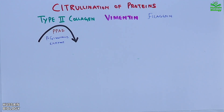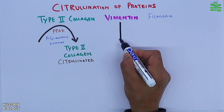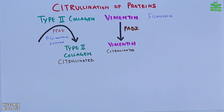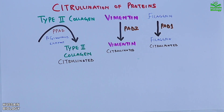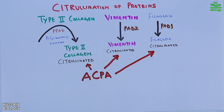Vimentin is citrinated by the PAD2 enzyme, and filaggrin is citrinated by the PAD3 enzyme. These citrinated proteins are modified proteins, and ACPA — generated by the risk factors — targets these citrinated proteins and launches an immune attack, while the immune cells no longer recognize these modified proteins.